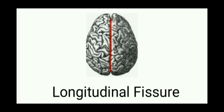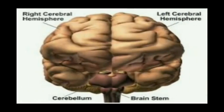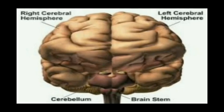For that fissure, we call the brain left hemisphere and right hemisphere. It is a semi-circle structure. If you look at left hemisphere, say left hemisphere. If you look at right hemisphere, say right hemisphere. This is the name of the Longitudinal Fissure.